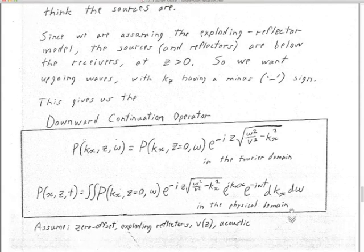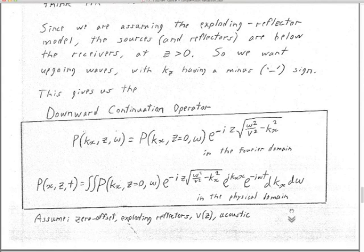Since we're using the exploding reflector model, the reflectors are the sources and the sources are below the receivers at z greater than zero — we don't have reflectors up in the air above the receivers. So since our sources are below the receivers, we're going to pick the left-hand side: up-going waves with kz having a minus sign. Now we know which one to pick. Here's the downward continuation operator that we can actually use.